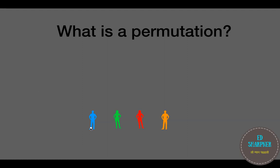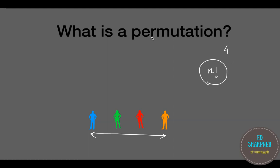The problem statement would be: how to arrange these four people in different ways, or find out the number of ways in which these four different people can be arranged. The formula that we know for permutation is n factorial. This formula says if there are four people to be arranged in a linear arrangement, there are going to be four factorial ways — that is nothing but 24.